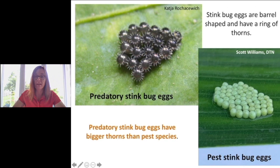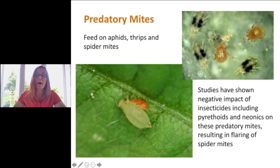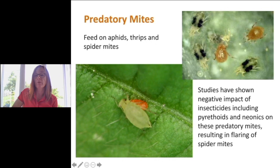Finally, in the predator group are predatory mites, which play a role alongside entomopathogenic fungi. These mites feed on thrips, aphids, and spider mites. But studies show that pyrethroids, as soon as you spray on the crop, kill the predatory mites and give spider mites freedom to flourish. The same goes with neonics — applications of neonics can do the same on predatory mites and flare up spider mite populations.